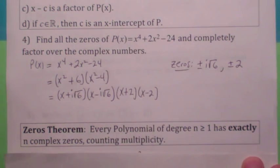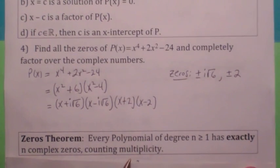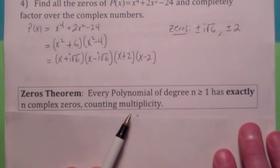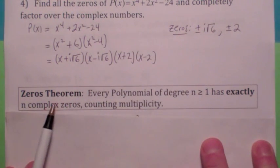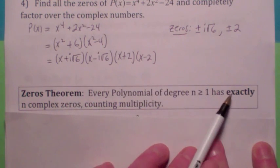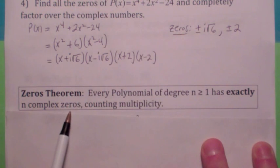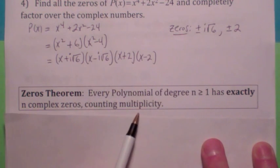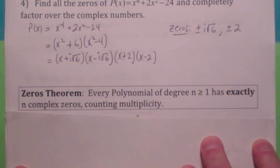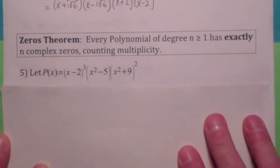So, it also illustrates what's called the zeros theorem. If you include the multiplicity of the zeros, then you can actually say this: every polynomial of degree n has exactly n complex zeros. If you allow complex numbers and count the multiplicity of the zeros, then every polynomial of degree n has exactly n zeros.